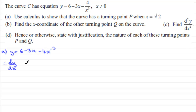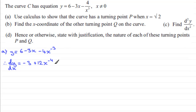Differentiating with respect to x: the differential of the constant 6 is 0; differentiating minus 3x gives minus 3; differentiating minus 4x to the minus 3 gives minus 4 times minus 3, which is plus 12, and we reduce the power by 1 to get x to the power minus 4. Cleaning this up, dy/dx equals minus 3 plus 12 over x to the power 4.